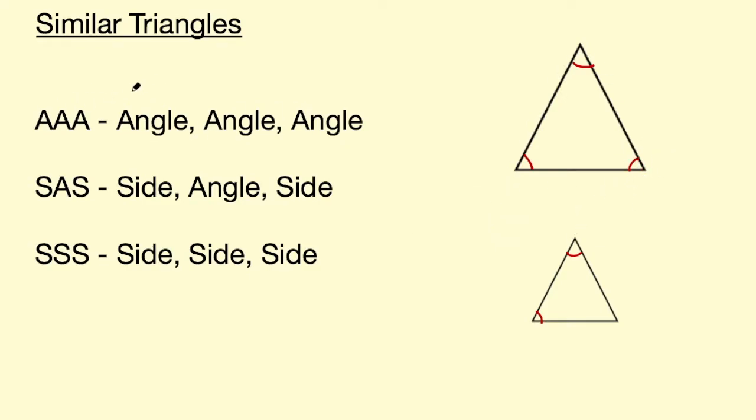So really, this could be AA, but it's usually written as AAA, angle angle angle. So if the angles are equal, then those triangles are similar.